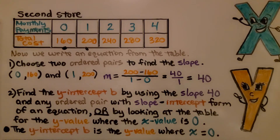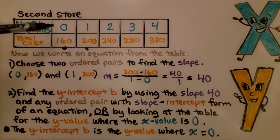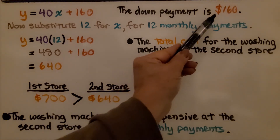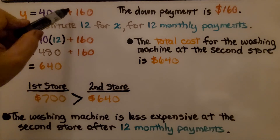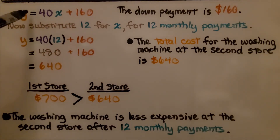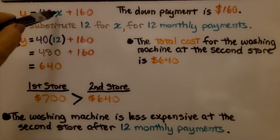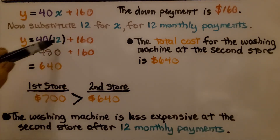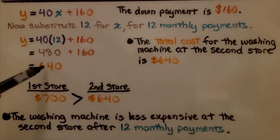We find the y-intercept b using the slope of 40 and any ordered pair in slope-intercept form — or by looking at the table for the y-value where x is zero. Since we know the y-intercept b is the y-value where x = 0, and the table shows $160 at zero months, there is a $160 down payment. So b = 160, giving us y = 40x + 160. Substituting 12 for x: 40 times 12 = 480, plus 160 = $640.